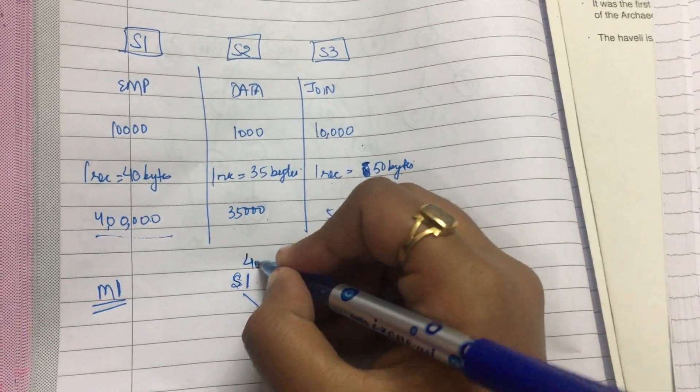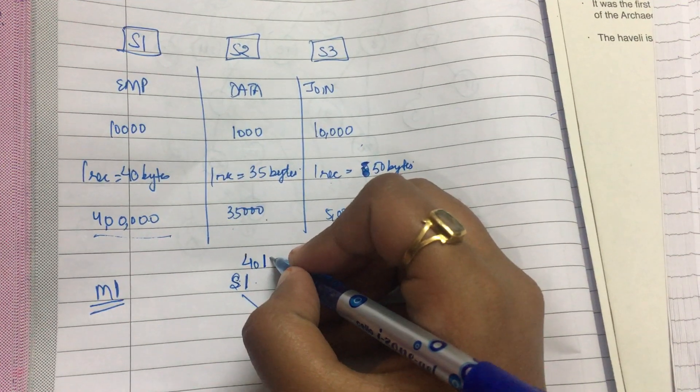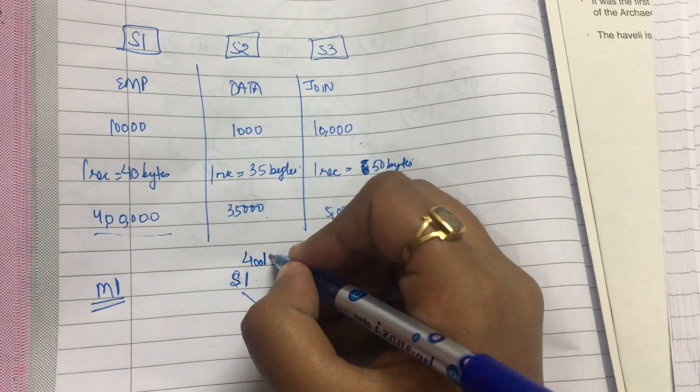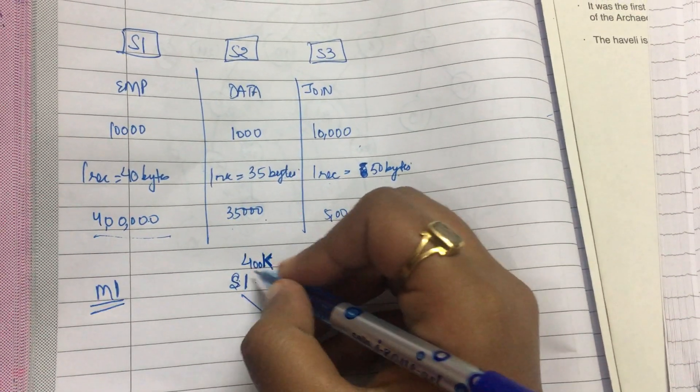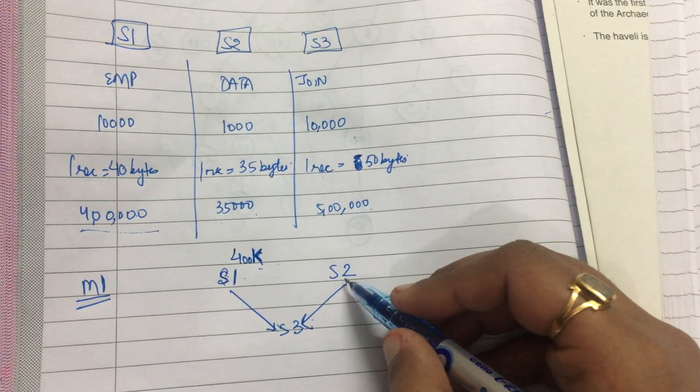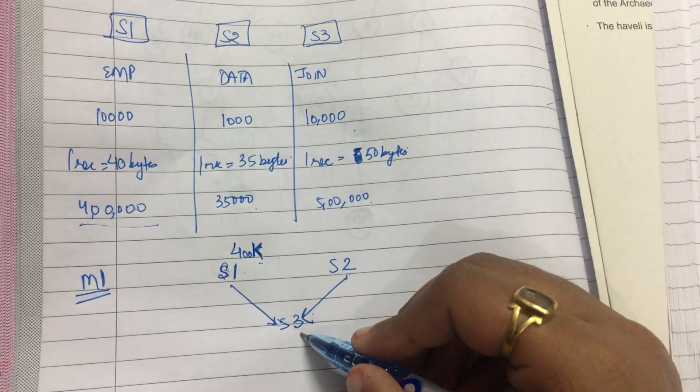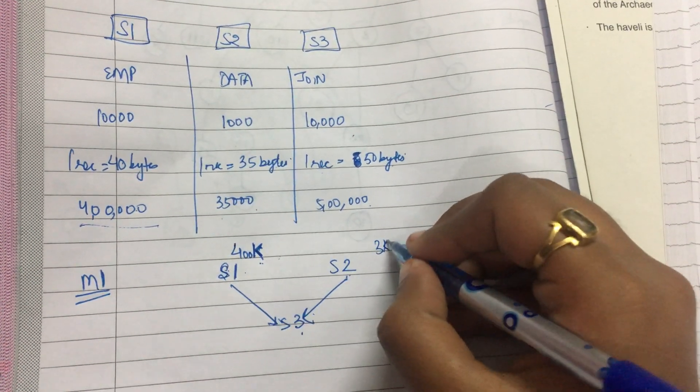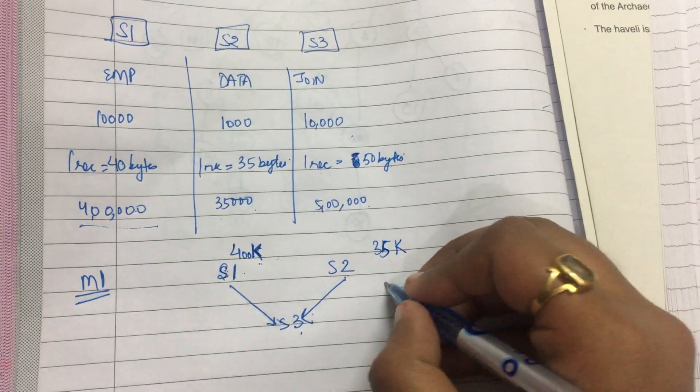will I send? 400K, that is 400,000 bytes of data. And from state 2 to state 3, I will be sending 35K bytes of data. That is, total I will be